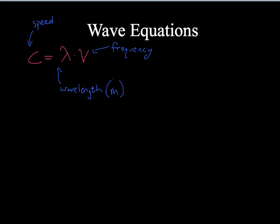The reason wavelength has to be in meters is because the speed of light is in meters per second — units have to match up so they cancel each other out. If you look at the measurements of wavelength, typically they're in nanometers, which means you're going to have to make a conversion. I'll show you how to do that. And frequency, of course, is in hertz.